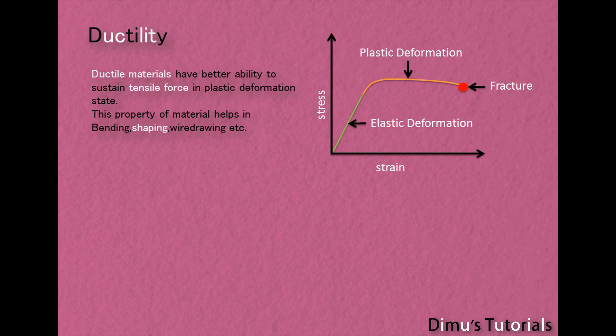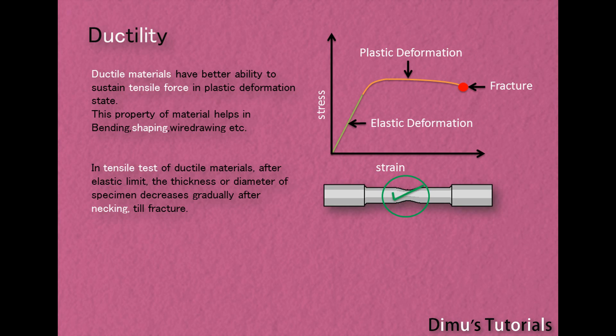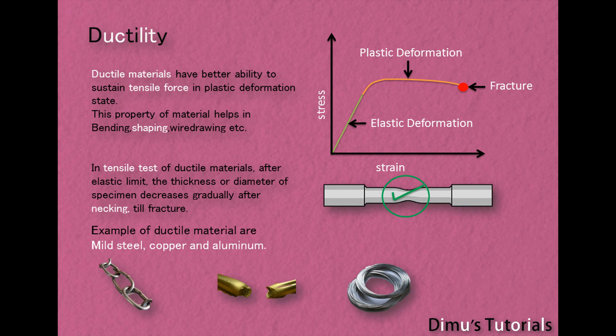Ductility. Ductile materials have better ability to sustain tensile force in the plastic deformation state. This property of material helps in bending, shaping, wire drawing, etc. In the tensile test of ductile materials, after the elastic limit, the thickness or diameter of the specimen decreases gradually after necking till fracture. Examples of ductile materials are mild steel, copper and aluminum.